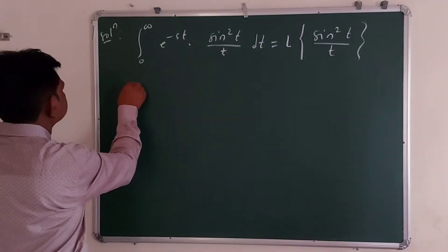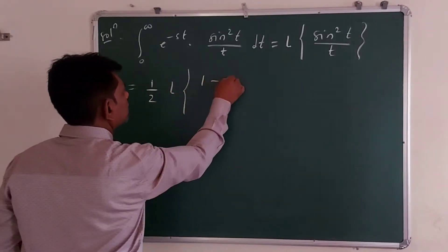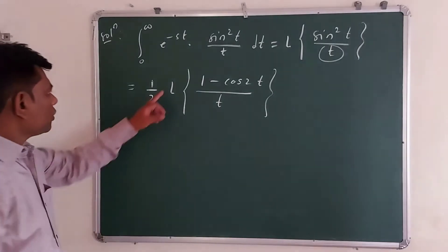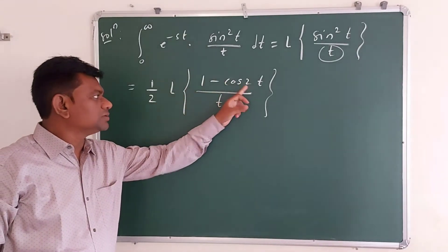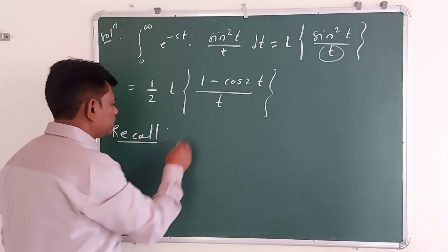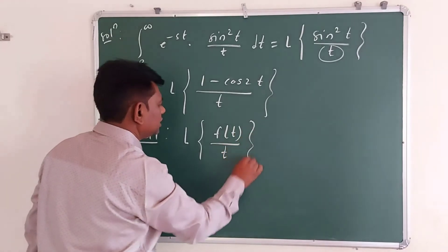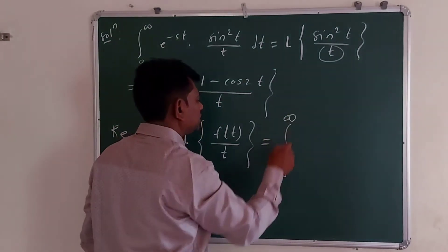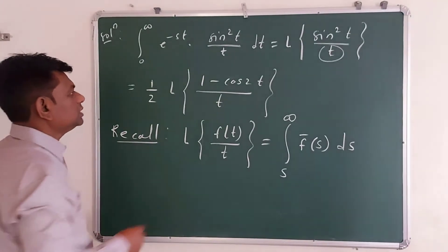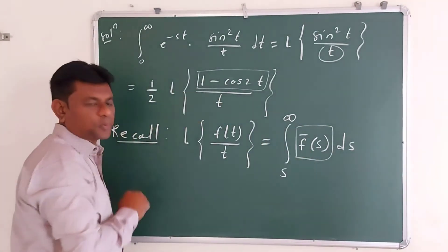We write this as half times the Laplace transform of 1 minus cos 2t over t. For the Laplace transform of 1 minus cos 2t over t, we recall the division by t property. According to this property, the Laplace transform of f(t) over t equals the integral from s to infinity of f-bar(s) ds, where f(t) equals 1 minus cos 2t and f-bar(s) is its Laplace transform.